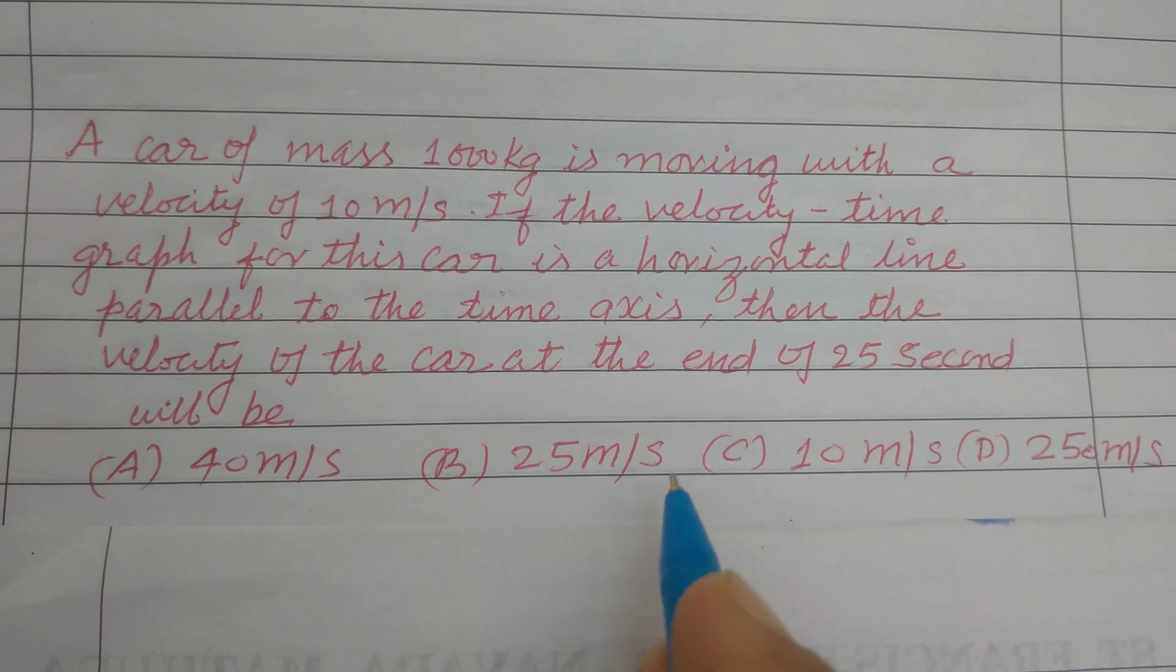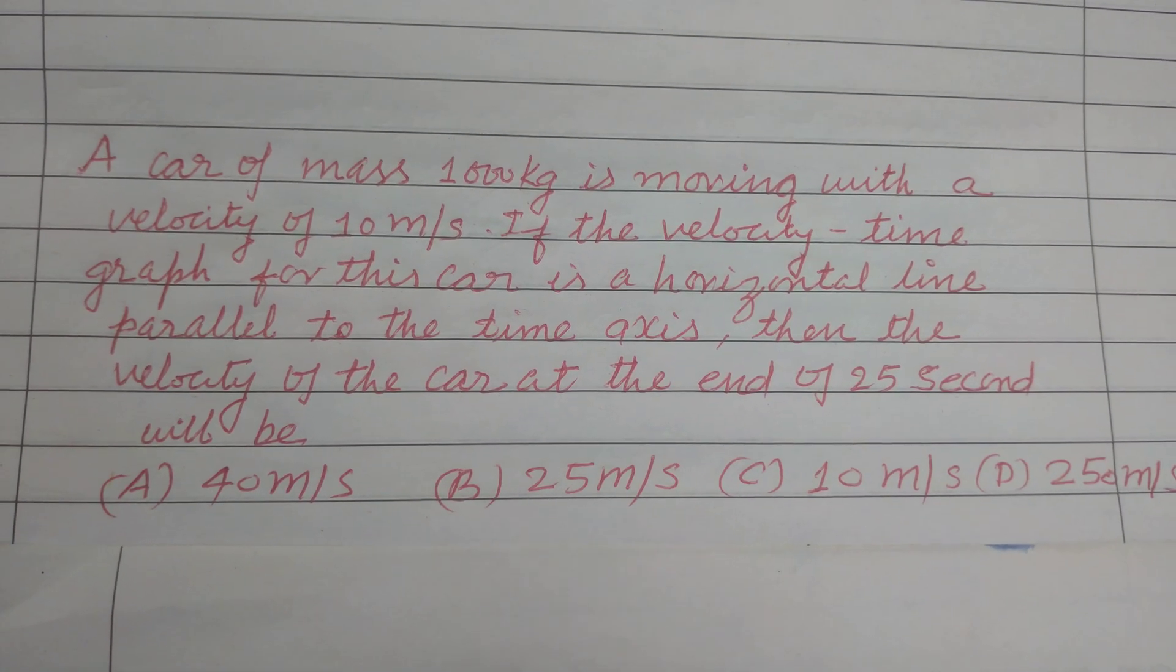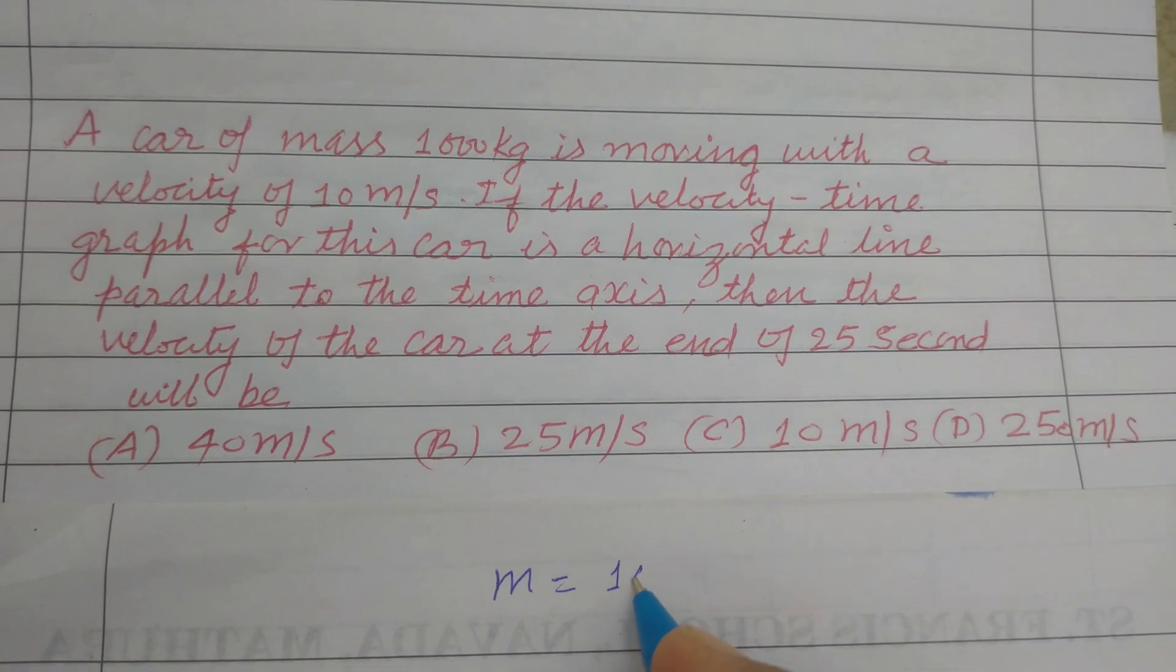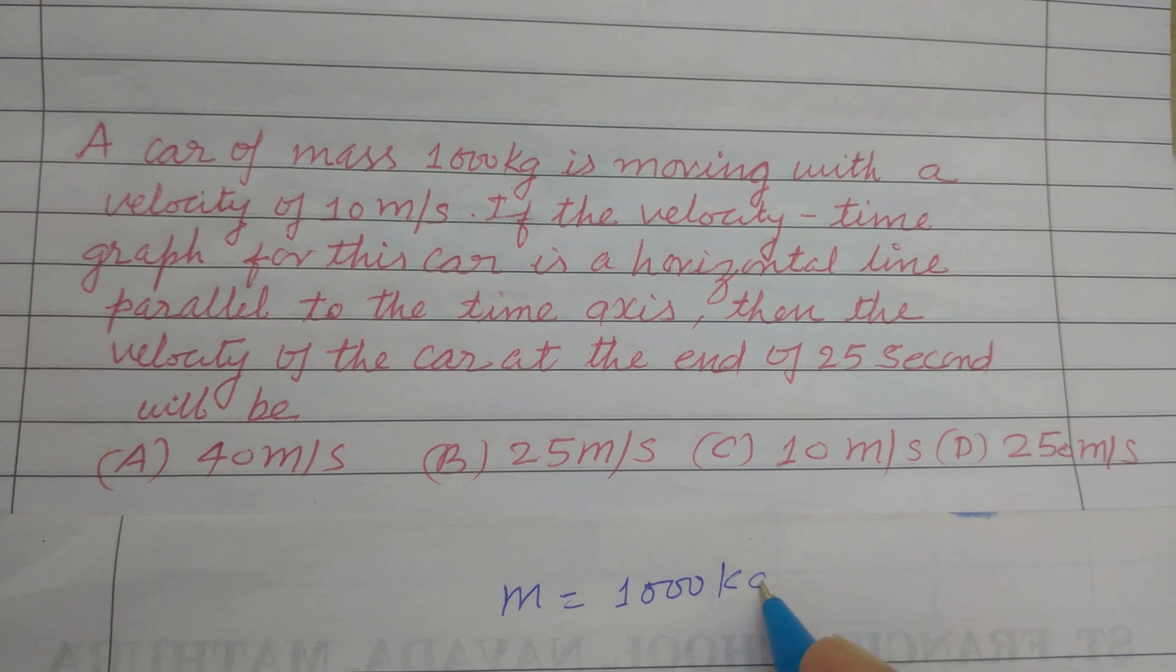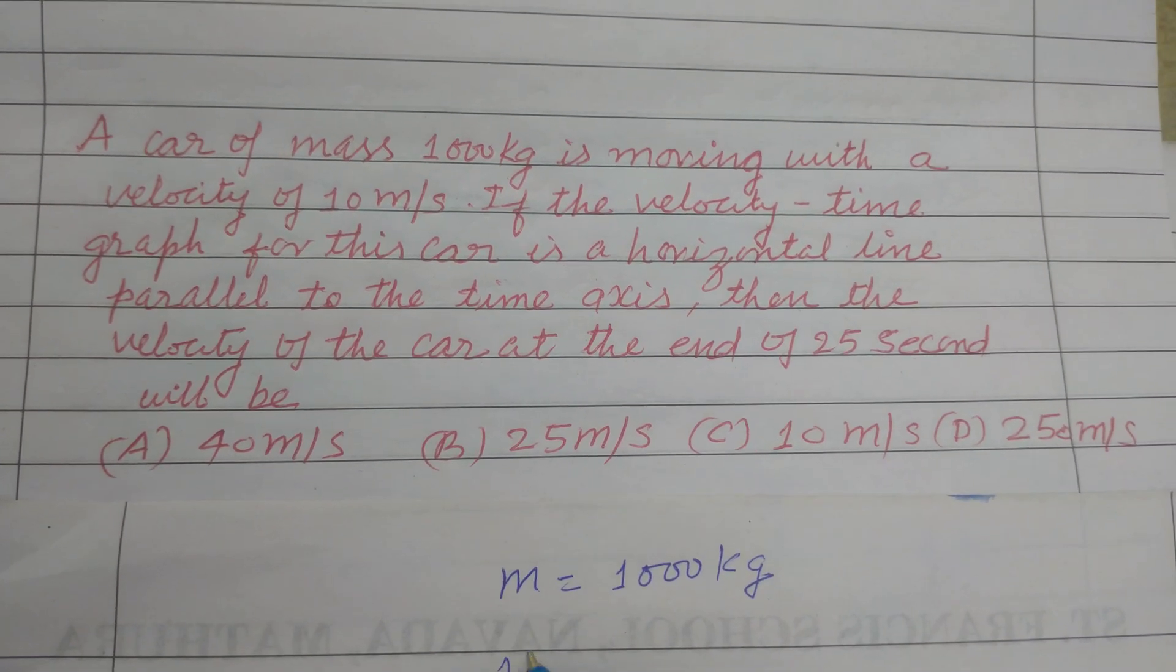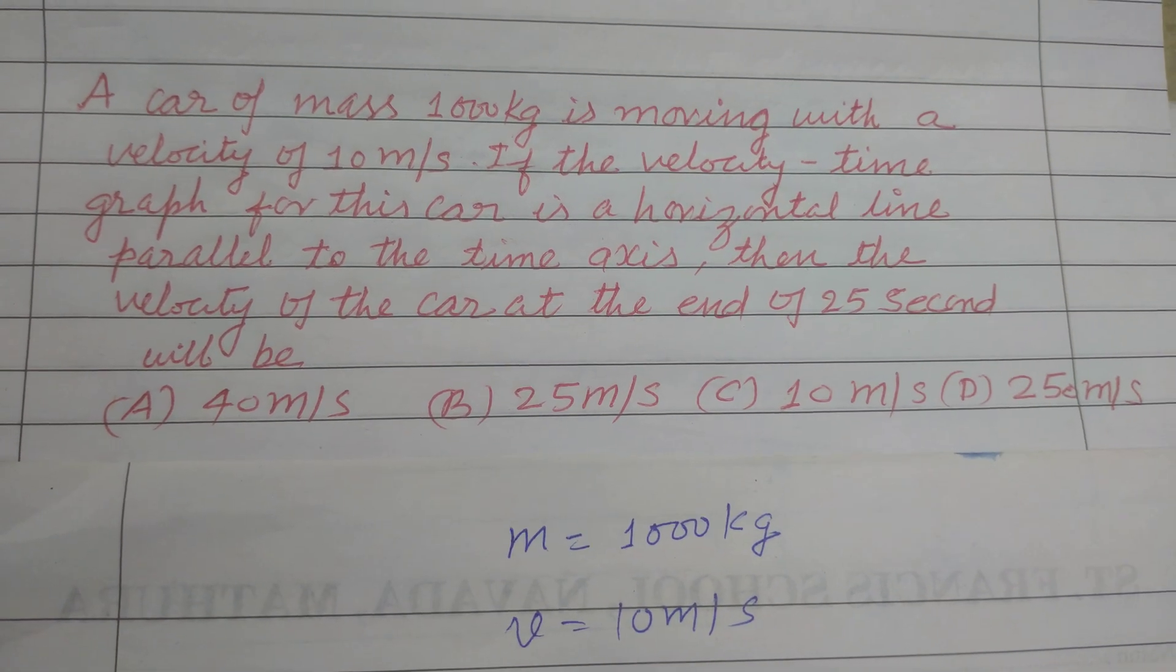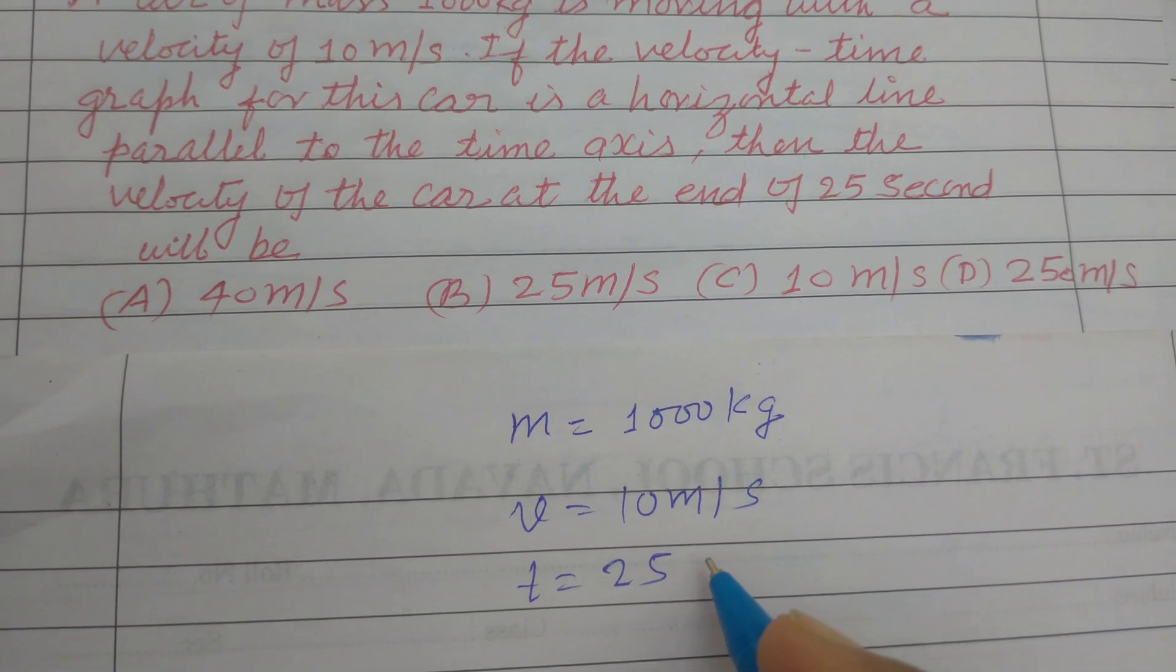So answers are given in options. So first here, mass of the car is 1000 kg and velocity is given 10 meter per second. And time is given 25 seconds.